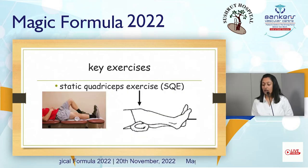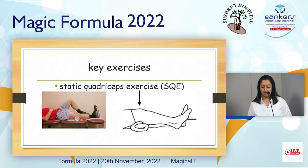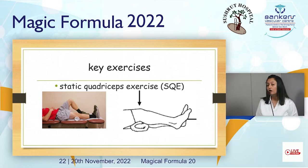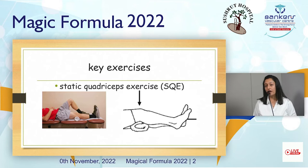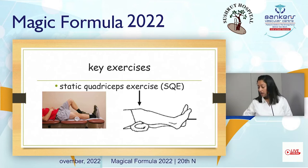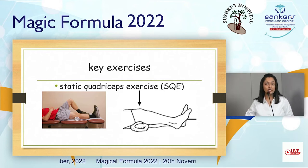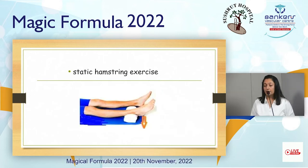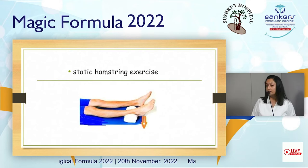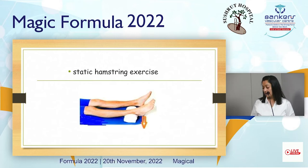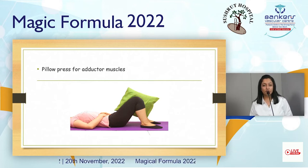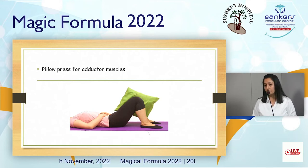Then you can do some key exercises. Static quadriceps exercise: put a roll or cushion below your knee and press your knee down. The count of exercise starts from a lesser count and increases gradually. Static hamstring exercise strengthens the hamstring muscles at the back of the thigh. Pillow press for adductor muscles gives stability and strengthening to the joint, mainly the adductor muscles.